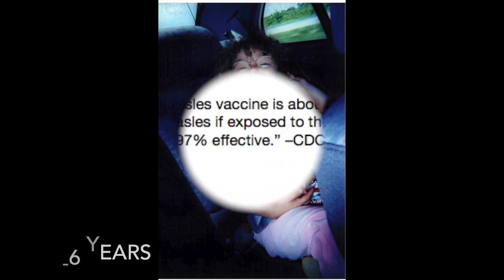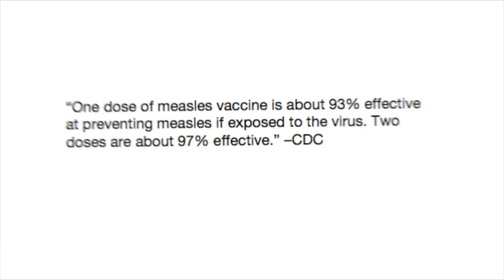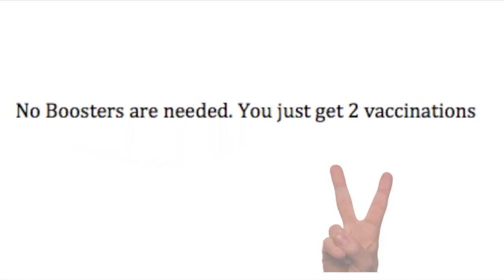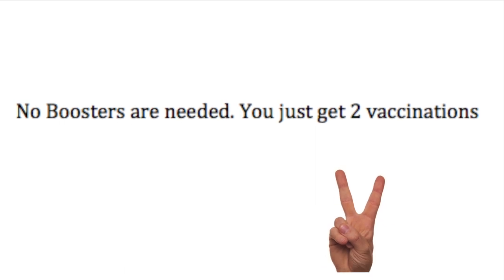Per the CDC, one dose of measles vaccine is approximately 93% effective at preventing measles if you're exposed to the virus. If you get two doses, it's approximately 97% effective. No boosters are needed — you just get those two vaccinations.